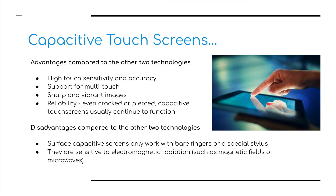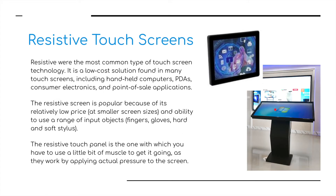Advantages of capacitive touch screens include high touch sensitivity and accuracy, support for multi-touch — you can use more than one finger, as certain controls on an iPad require — and sharp, vibrant images. They're reliable even if the screen is cracked. Disadvantages: surface capacitive screens only work with bare fingers or a special stylus such as the Apple Pencil, and they are sensitive to electromagnetic radiation such as magnetic fields or microwaves.